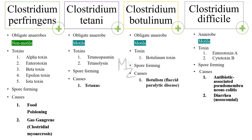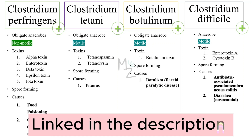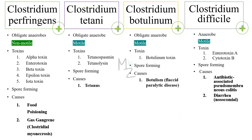Clostridium perfringens is responsible for causing food poisoning and gas gangrene, also called clostridial myonecrosis. Clostridium tetani, as its name suggests, causes tetanus, with its famous symptom of lockjaw. Clostridium botulinum is responsible for causing botulism, commonly known as a flaccid paralytic disease. Clostridium difficile causes antibiotic-associated pseudomembranous colitis — specifically associated with clindamycin and certain other antibiotics — and also nosocomial diarrhea, acquired from the hospital.